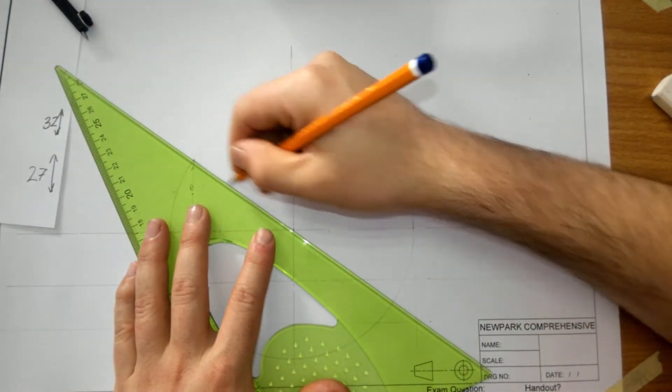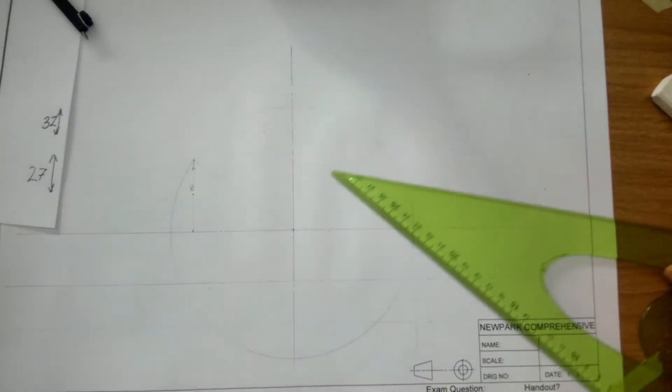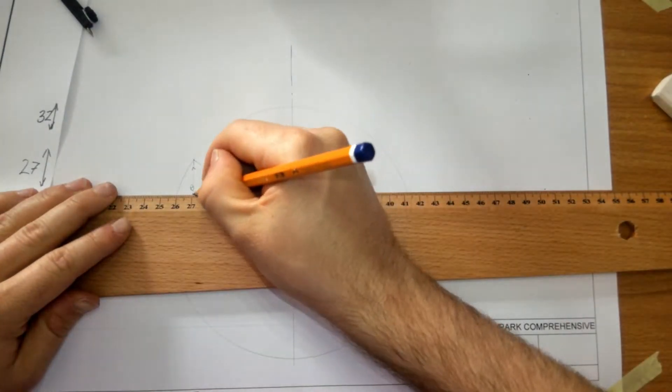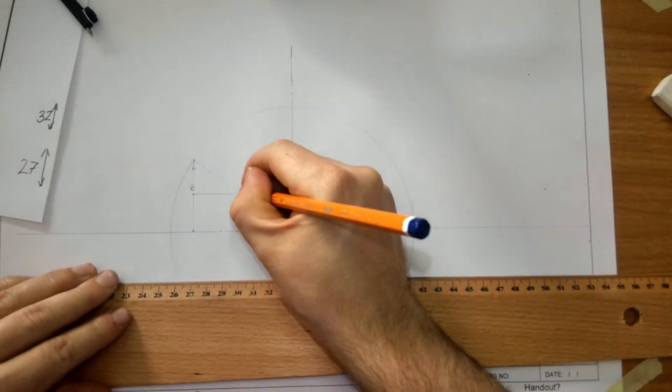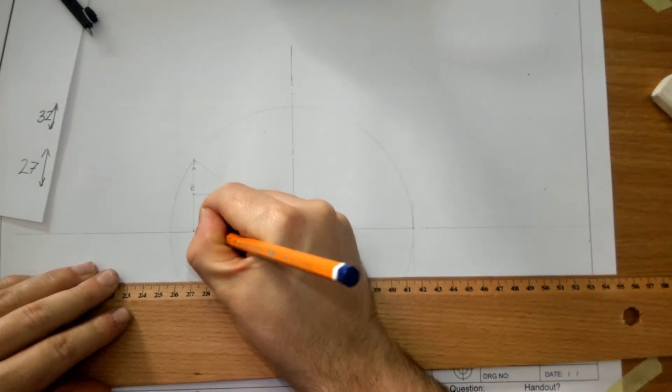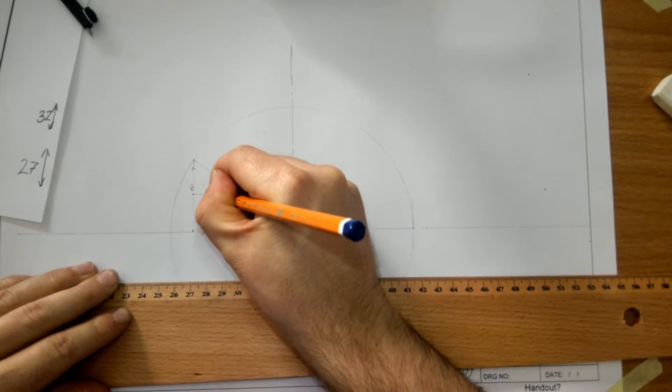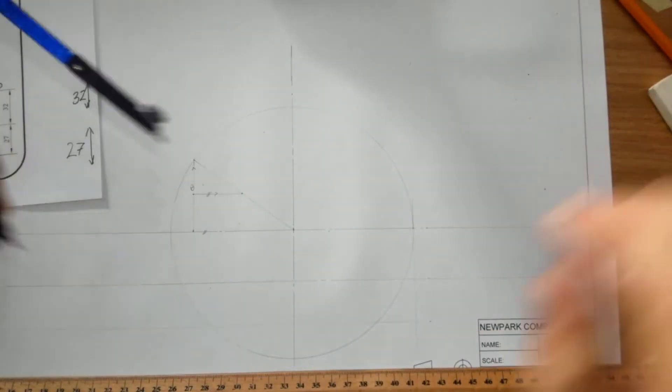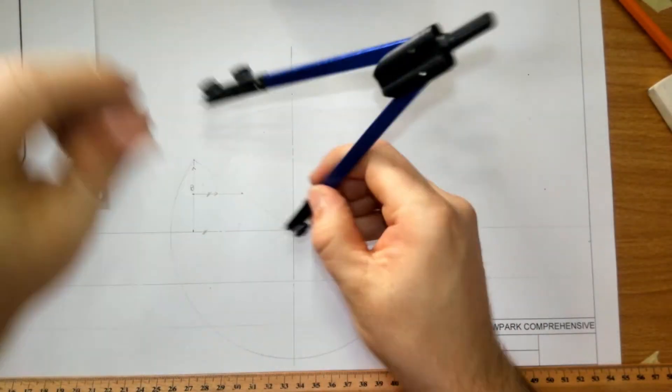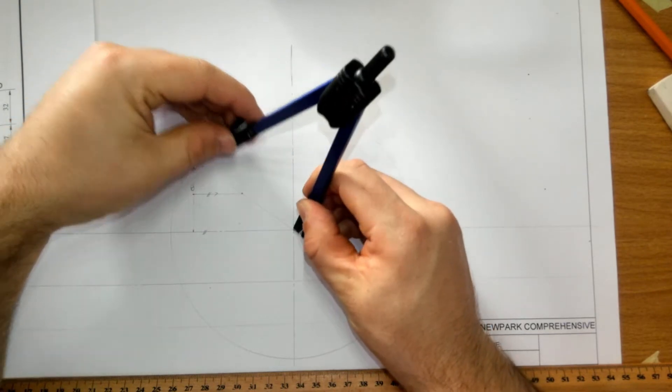From B I'm going to go parallel to the major axis until I hit that inclined line. Now I have a point on the minor circle. I'm going to draw in my minor circle, and then I'm going to divide it into 60-30.